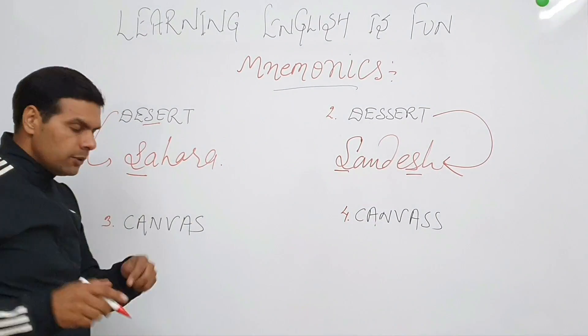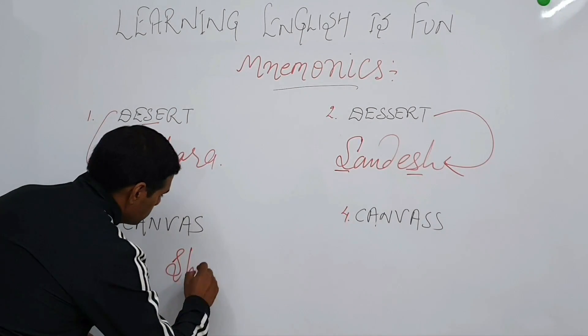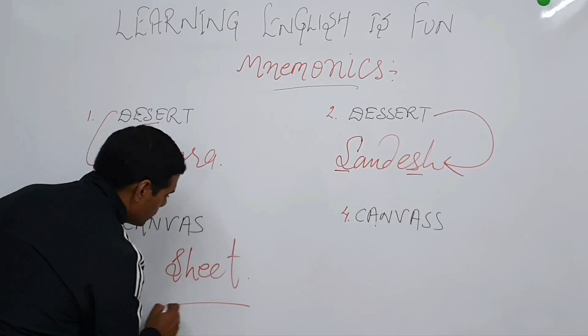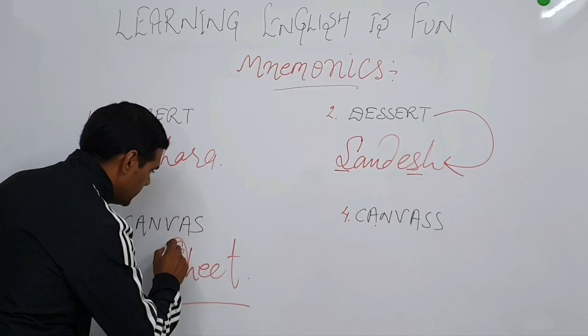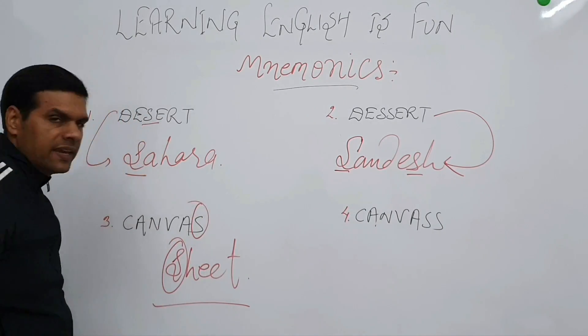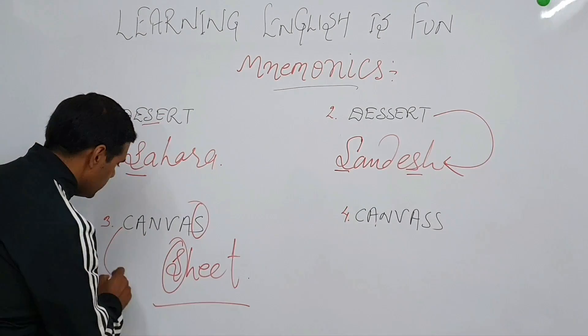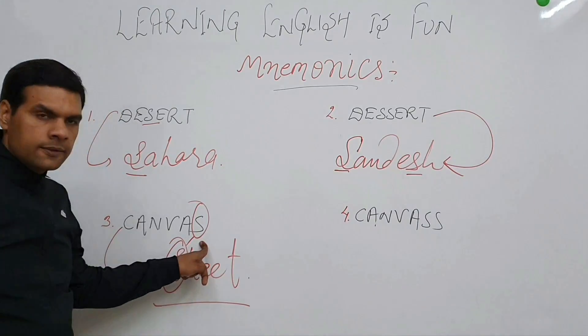So we can also say canvas is a type of sheet, sheet of cloth. So sheet has got one 's' which is here and so does the spelling of canvas. So once you associate these two words, you will know that there will be only one 's' here.